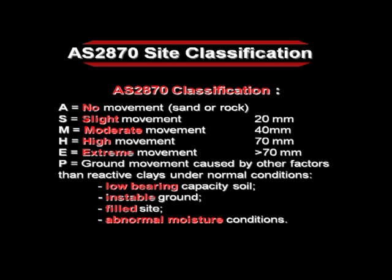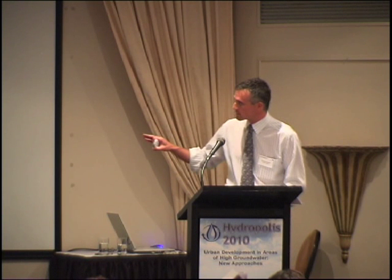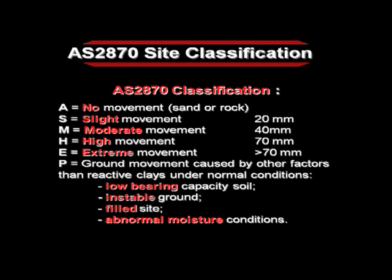Here are the site classifications. A class A site means no ground surface movement — no reactive clays; the soil profile includes either sand or rock, or clays are deep enough not to impact the surface. Class S means slight movement, up to 20 mm. M is moderate movement, 40 mm. H is high movement, 70 mm. And class E, extreme, is more than 70 mm. The last class is P, which covers all other sites where ground surface movements are caused by factors other than swelling and shrinkage of reactive clays — for instance, low bearing capacity soils, unstable ground, controlled fill sites, or abnormal moisture conditions.